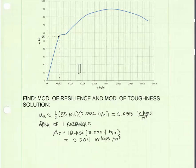I can calculate the area of one rectangle: it has a height of 10 kSI, a width of 0.0004 inches per inch, and that gives me 0.004 inch kips per cubic inch.